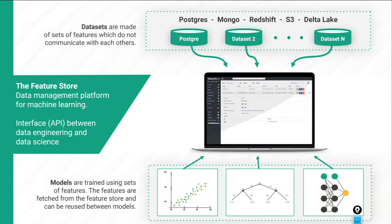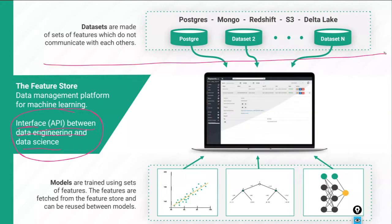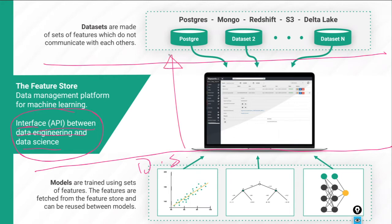The feature store is this interface between engineering and data science — a platform that sits between your backend data engineers and your data scientists. The data scientists train models and go to the feature store to get their features. If features are not available, they'll work with data engineers to compute those features from backend platforms: online operational databases, data lakes, Kafka brokers, and wherever that data comes from. The engineers will featurize that data and make it available for training models.